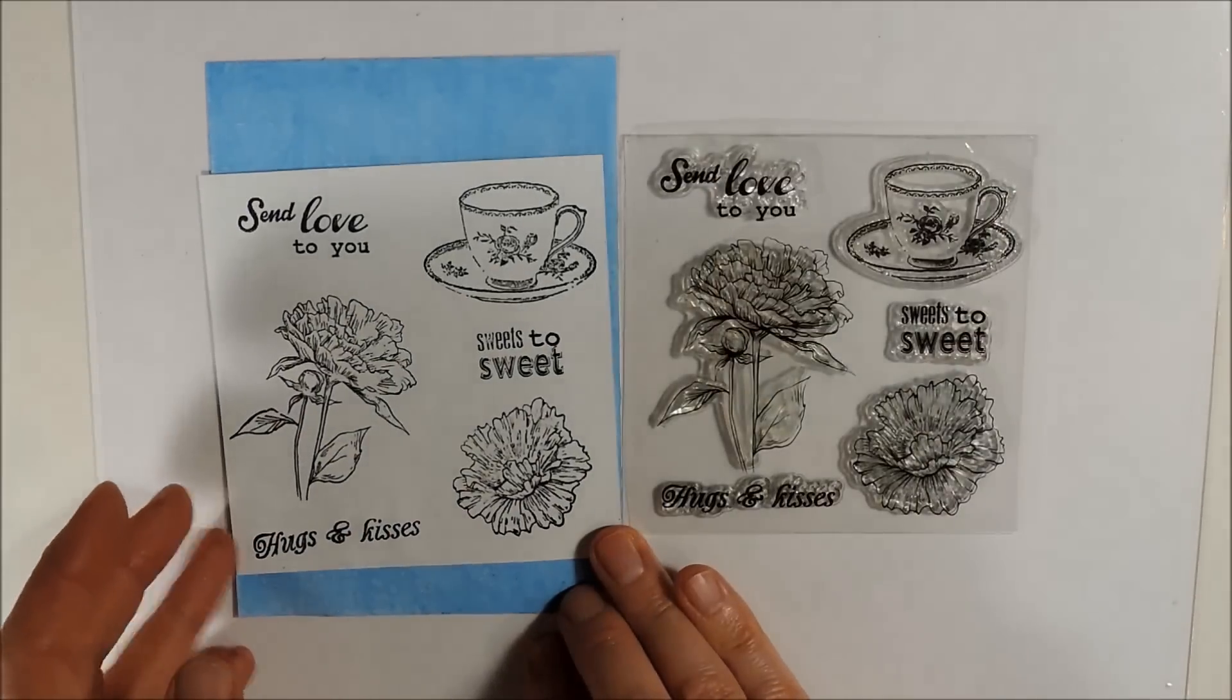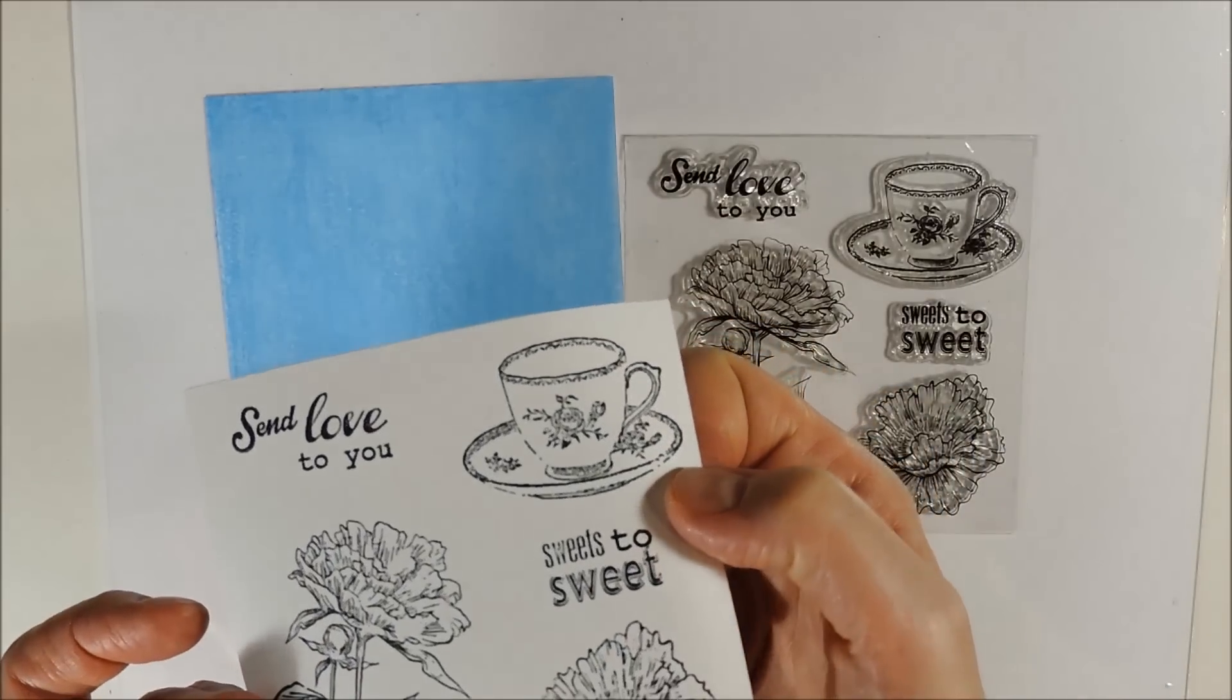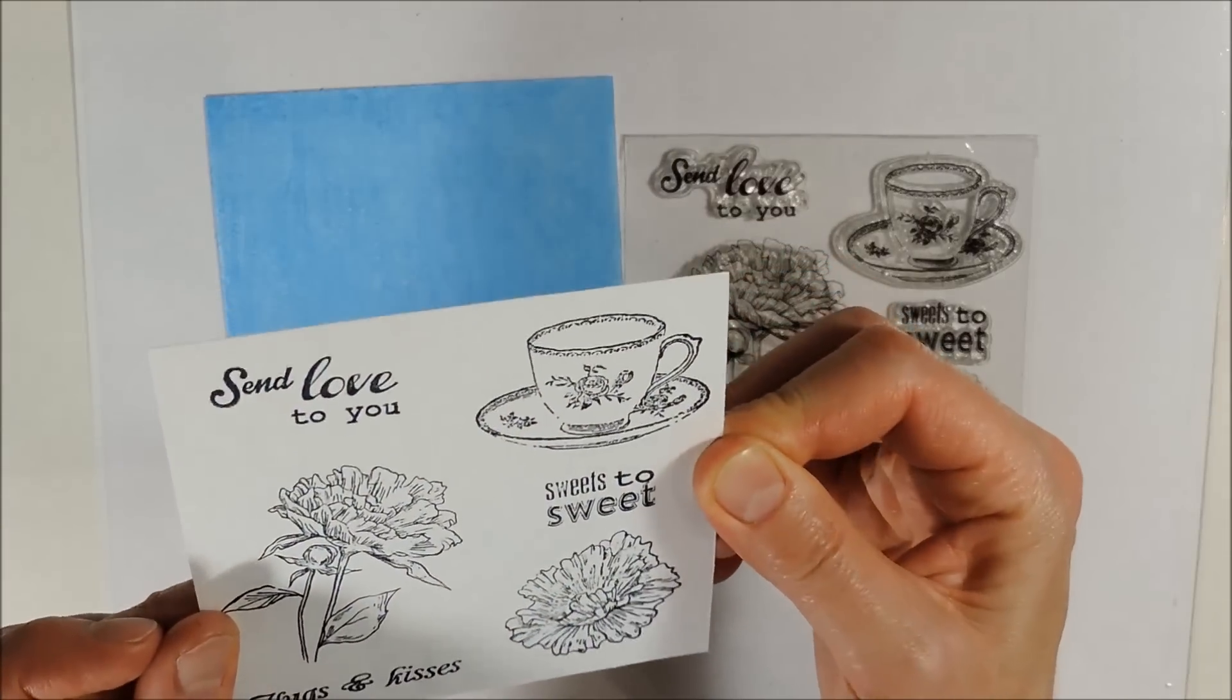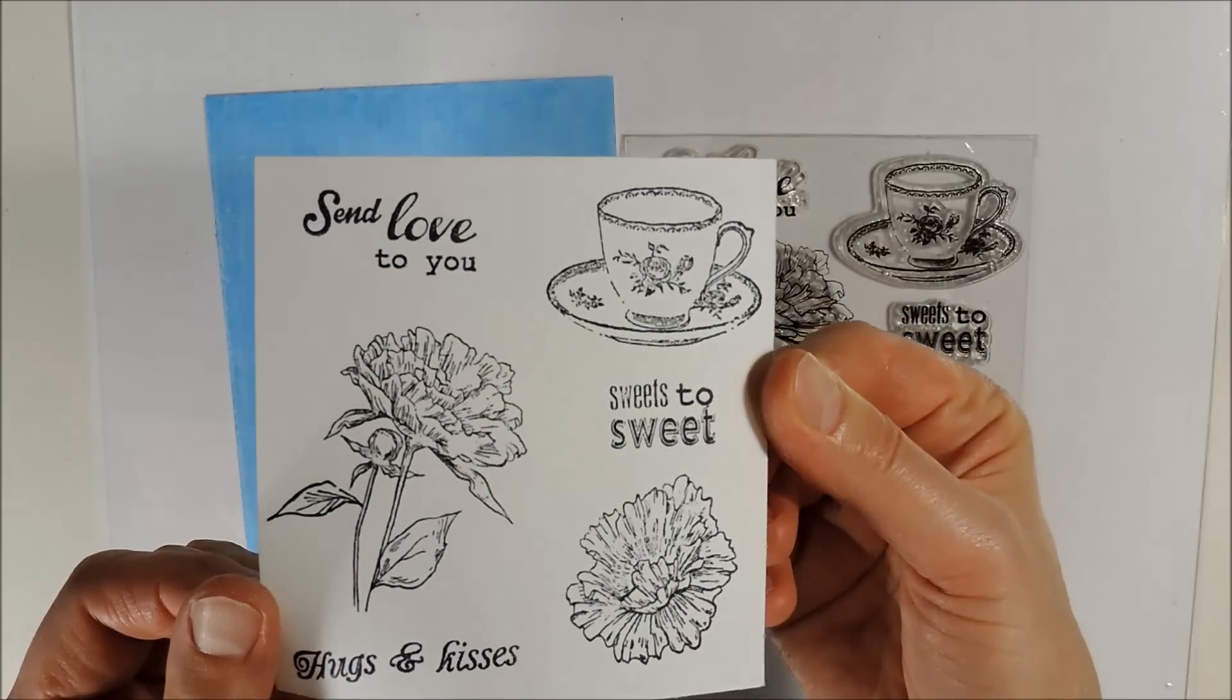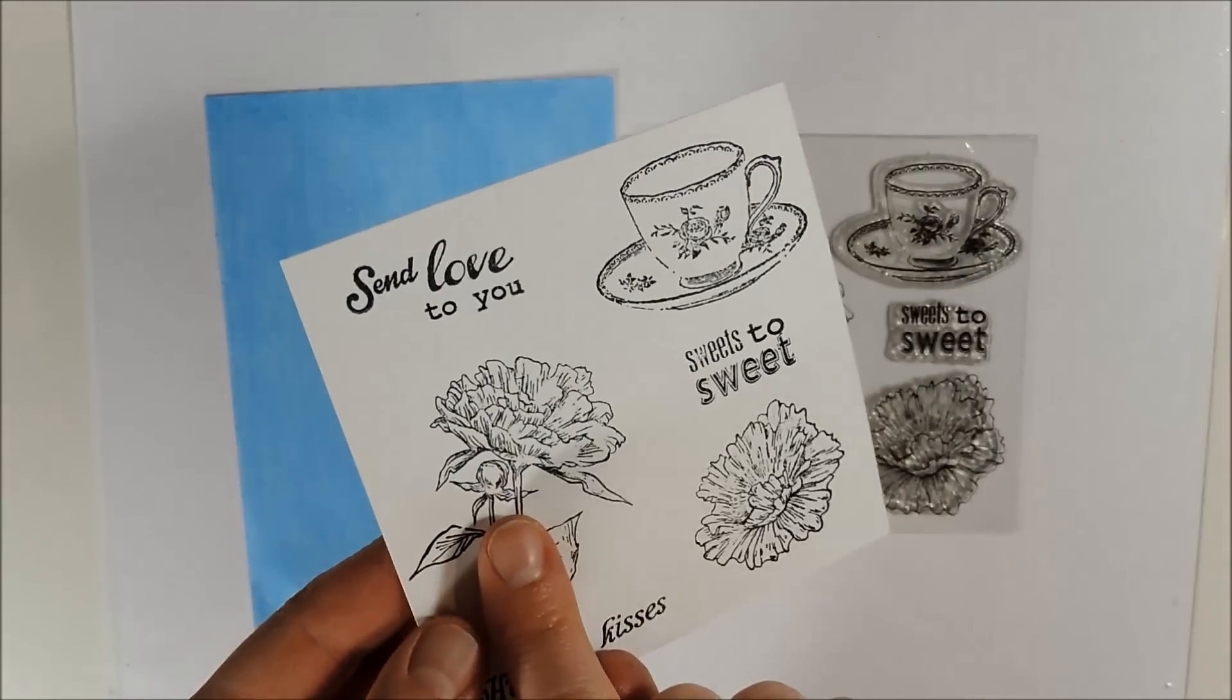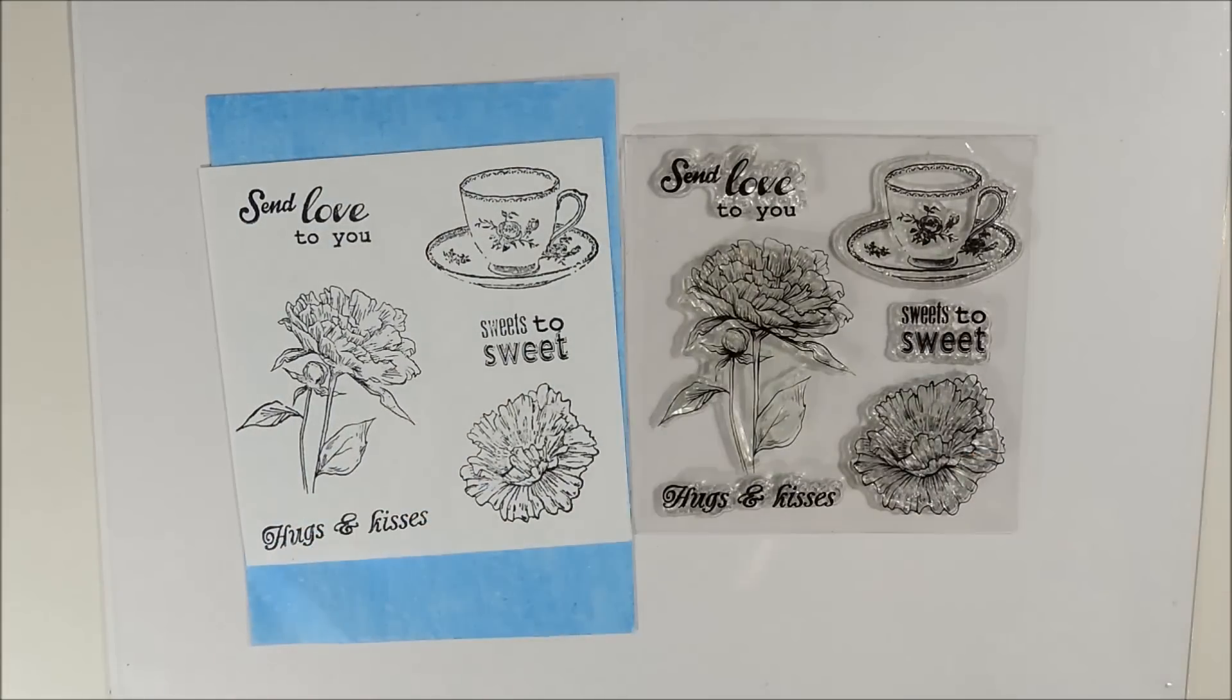The next stamp set is about the same size. And it says laugh to you, sweet to sweet, hugs and kisses. And as you can see there are some parts of the stamp they won't stamp properly. As the plate of the cup and here the center of the little butt. But I think it is still a beautiful stamp set.